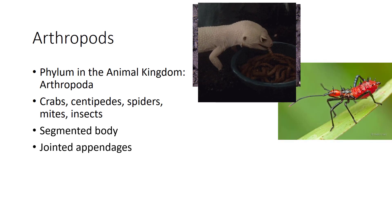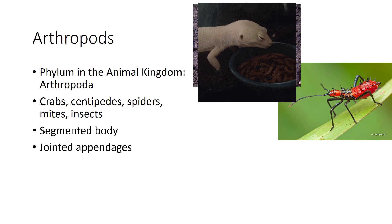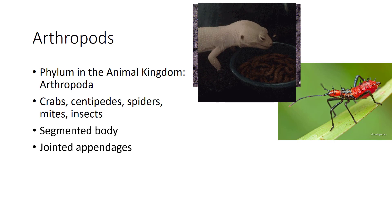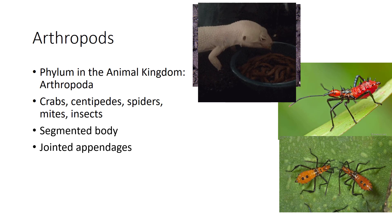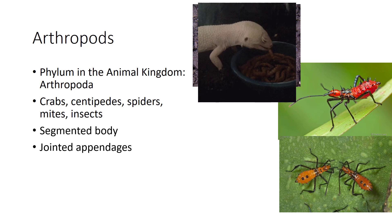Second, all arthropods have paired jointed legs. You can see how these legs easily bend in this assassin bug nymph, which is a beneficial organism, unlike the extremely similar leaf-footed bug nymph, which is a plague on vegetables. You will find leaf-footed bug nymphs in clusters and assassin bugs hunting solo.